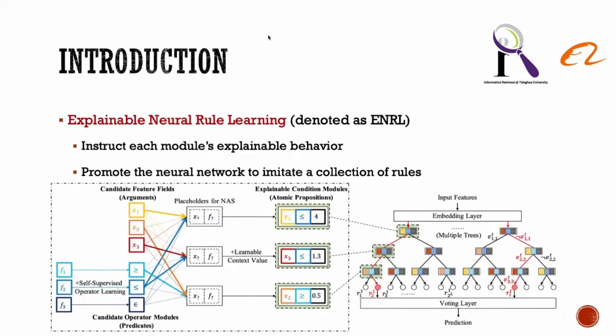To solve the problem, in this work we propose a novel method to conduct Explainable Neural Rule Learning, denoted as ENRL. We aim to improve neural networks' explainability by instructing each module's explainable behavior and promoting the neural network to imitate a collection of rules.